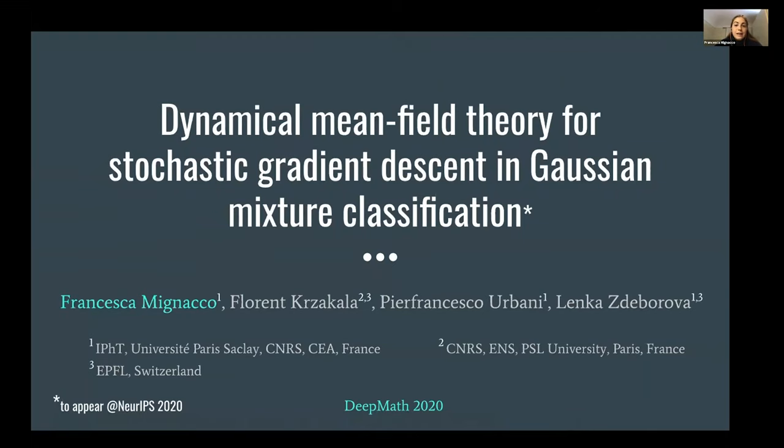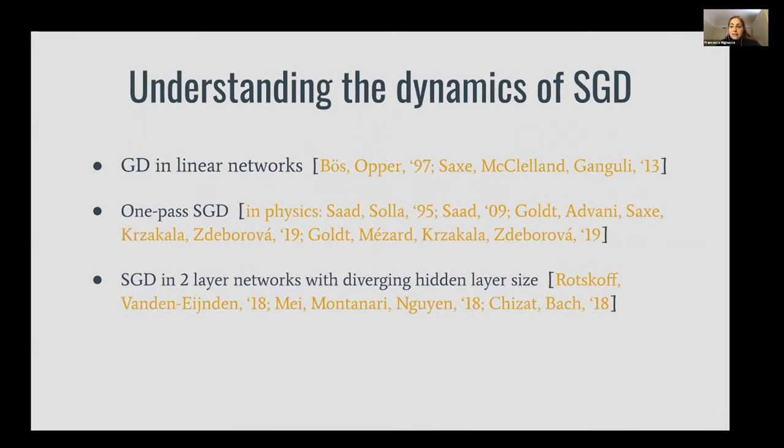This is a joint work with Florenza Cala, Francesco Urbani, and Lenka. Understanding how the stochastic gradient descent algorithm initialized at random is able to achieve good generalization performance is a central problem in machine learning.